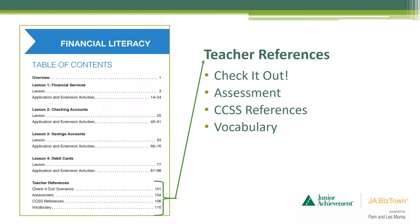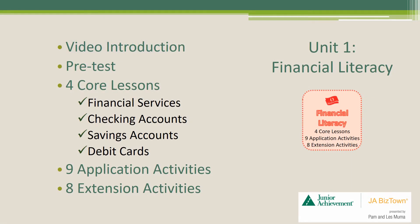Now that we have reviewed the format for each unit, we will go through each unit and highlight things to know. Let's get started with Unit 1, Financial Literacy. During this unit, students will begin to understand the fundamental concepts of earning and spending and the importance of sound personal finance. It also introduces students to banking services and practices that will help them be successful in JA BizTown and in life. This unit includes a video introduction to the program, a pretest, four core lessons, nine application activities, and eight extension opportunities you can choose from.